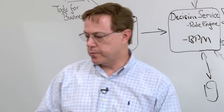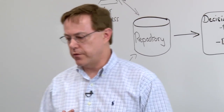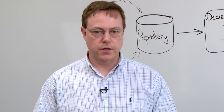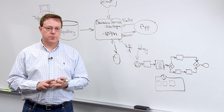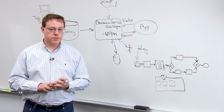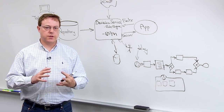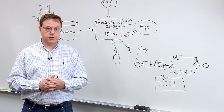So with BRMS 5.3, you have an extremely powerful tool for business automation — business process management, business rules, and business events all integrated into a single distribution. Thank you.